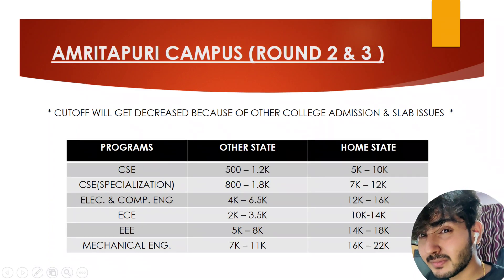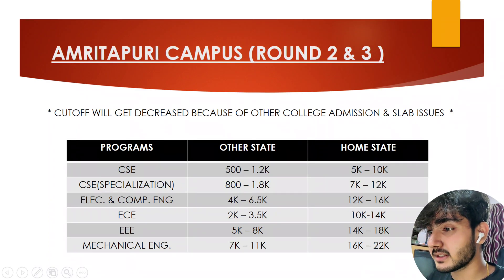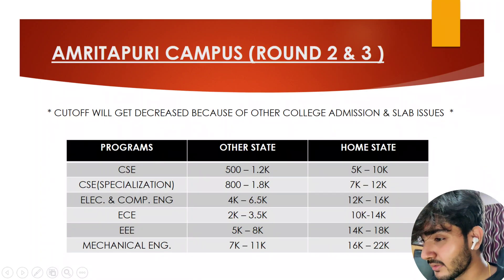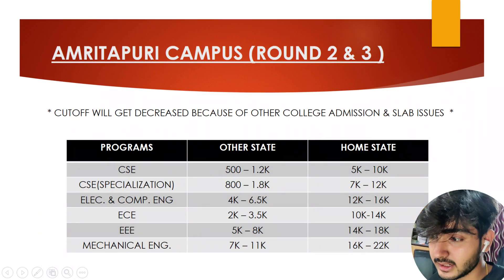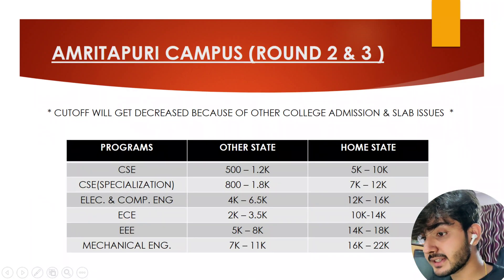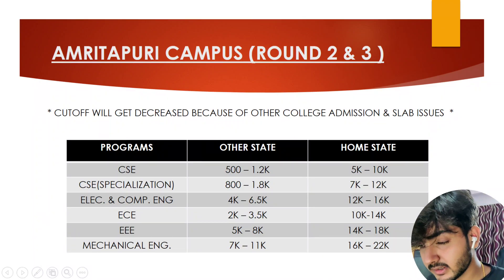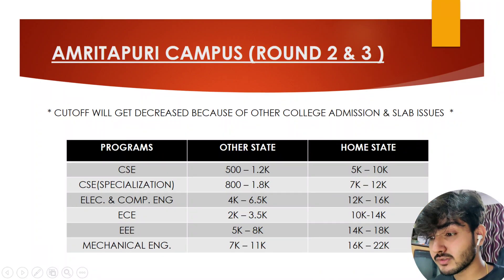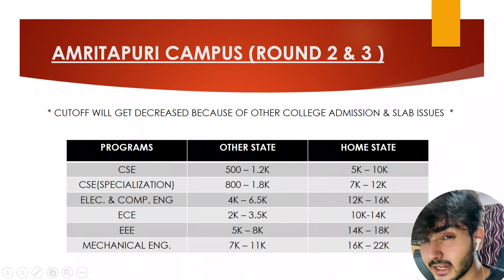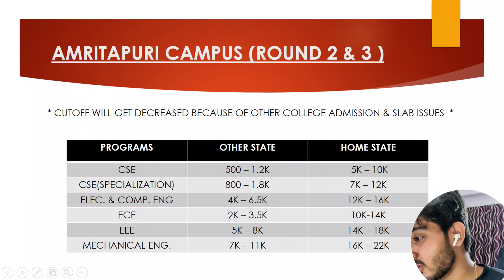Now let's talk about the Amrita Puri campus. The CSE cutoff for other-state is 500 to 1,200. For CSE specializations, it is 800 to 1,800. For Electronics and Computer Engineering, it is 4,000 to 6,500. For EC, it is 2,000 to 3,500. For Triple EE, it is 5,000 to 8,000. For Mechanical Engineering, it is 7,000 to 11,000. 'k' means thousand.